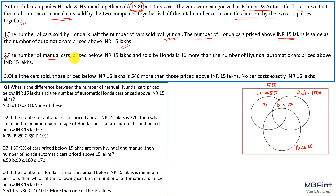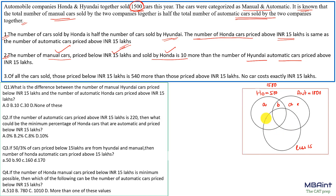The second condition: manual cars priced below 15 lakhs sold by Honda — which is the region outside Automatic and inside Honda and below 15 lakhs — is 10 more than the number of Hyundai automatic cars priced above 15 lakhs. So that region can be expressed as a + 10.